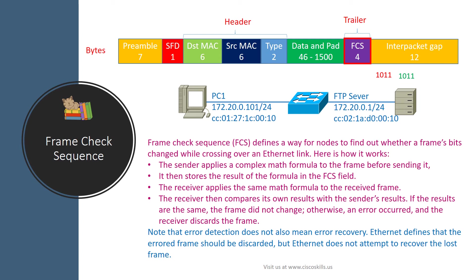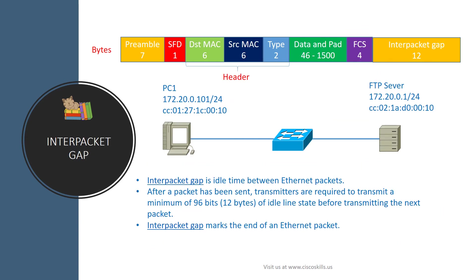If the results are the same, the frame has not changed. Otherwise, an error has occurred and the receiver discards the frame. Note that error detection does not mean error recovery — Ethernet defines that errored frames should be discarded, but Ethernet does not attempt to recover the lost frame. The FCS marks the end of an Ethernet frame.